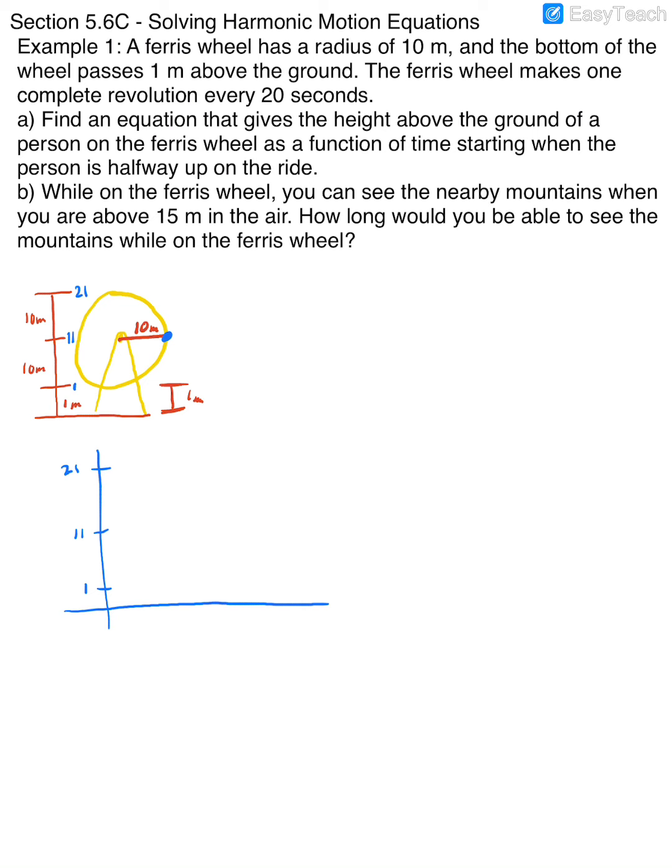That would suggest, looking at my map, that I am currently, or you are currently, at 11 meters in the air. So at time zero, and these are talking about time, not so much a radian measurement, at zero time before the ride even starts for you, you're at 11 meters in the air. And then from there, after a certain amount of time, you're going to be at different spots.